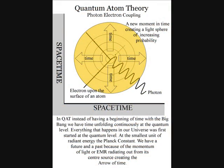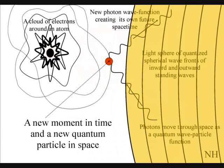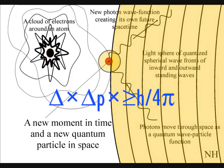In this theory, at the quantum level of the atoms, the moment of now is created by a single photon-electron coupling, creating a wave function of future possibilities.